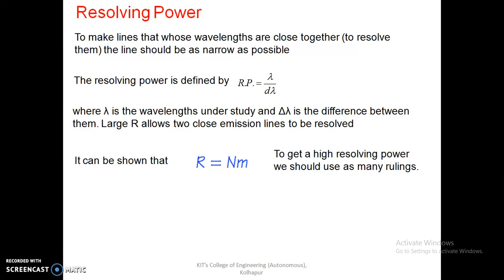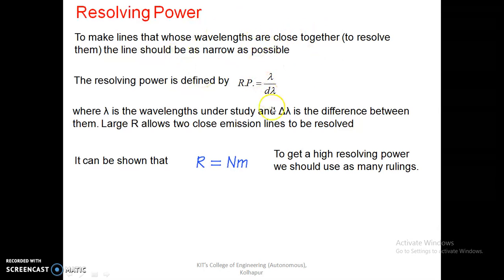The resolving power of diffraction grating is the ability to resolve spectral lines that are closely spaced. The two lines are defined as having wavelengths λ and λ + dλ. The resolving power of diffraction grating is defined as the ratio of the wavelength λ to the least difference dλ in wavelength that can be just resolved. This resolving power equals n × N, where n is the order and N is the total number of slits.